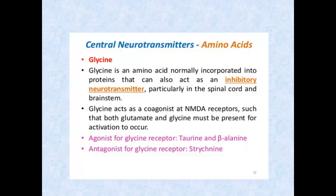Another neurotransmitter is glycine, which is an inhibitory neurotransmitter. Glycine binds with the glycine receptor; taurine and beta-alanine also interact with it. Strychnine is the drug that acts against glycine — you have to remember strychnine. In its mechanism of action, glycine binds with NMDA receptors and inhibits their activity, which is why it is an inhibitory neurotransmitter.